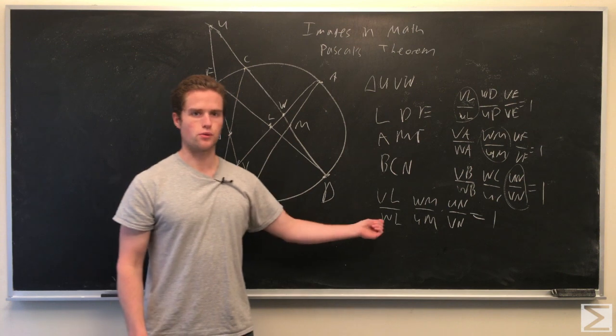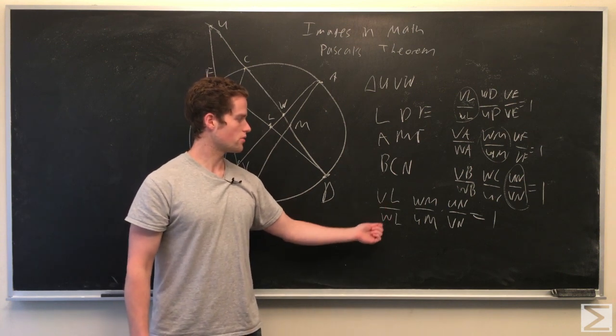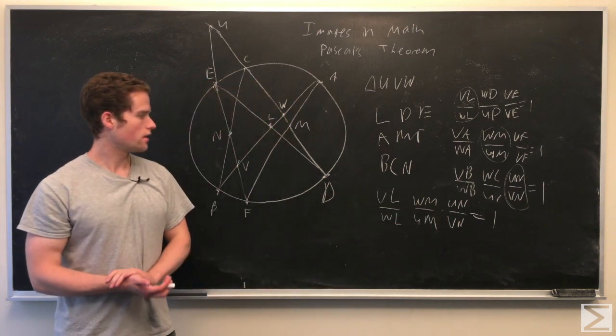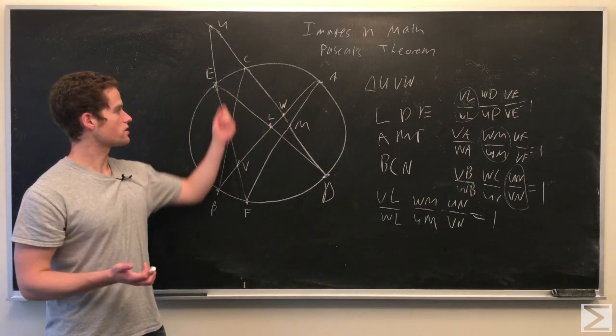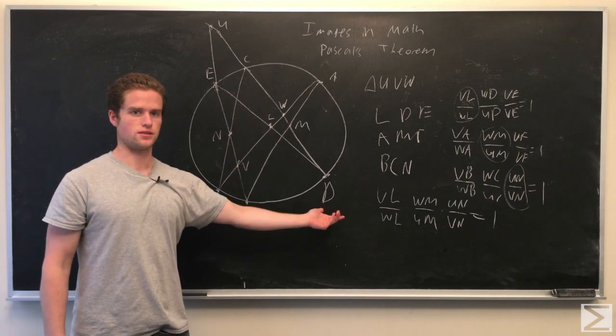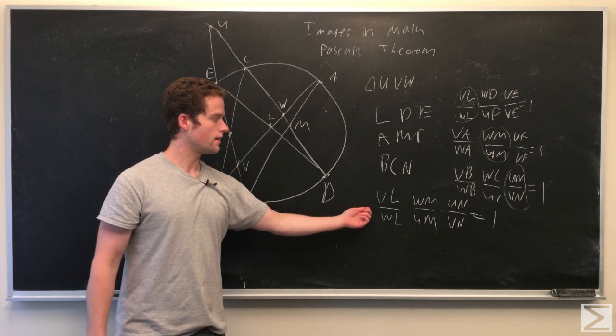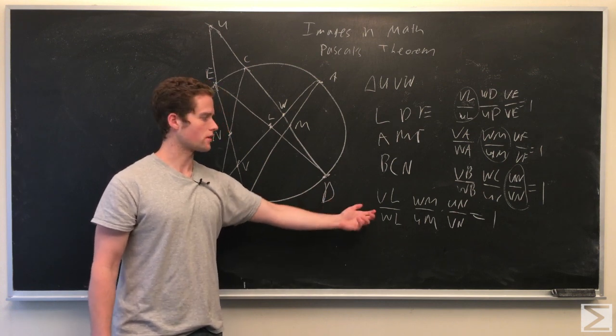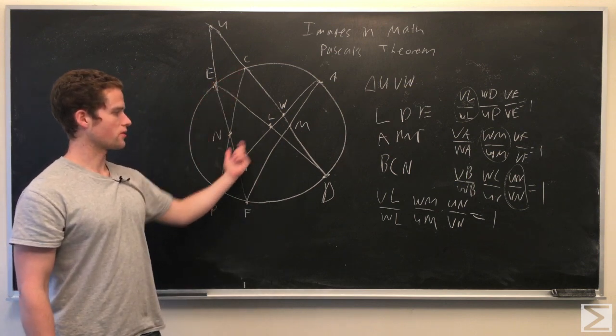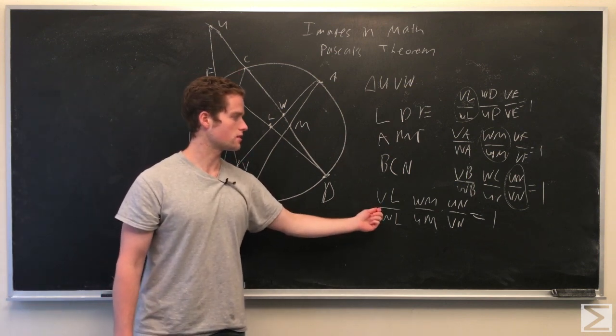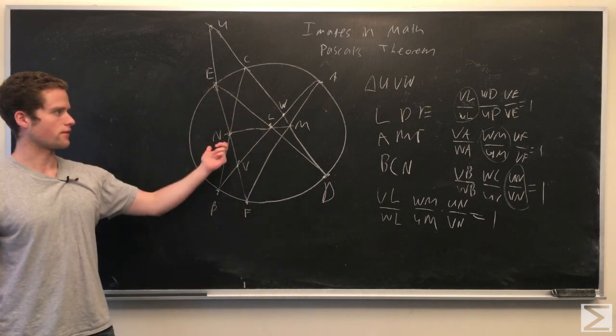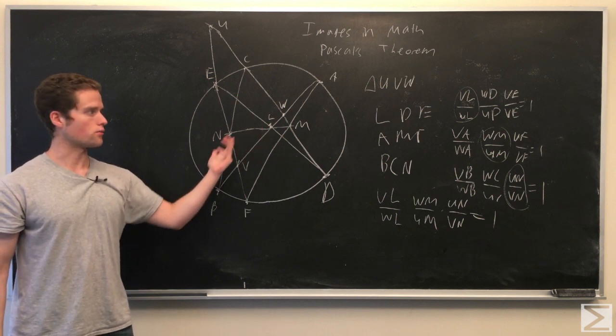Multiplying everything through, we're left with what we want, which is VL over WL times WM over UM times UN over VN equals 1. This is just the equation for Menelaus theorem. This is satisfied by the same theorem, the converse. The points being collinear implies this, and the converse is true, this also implies the points are collinear. So this implies that in fact these three points are all on one line.